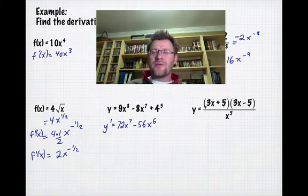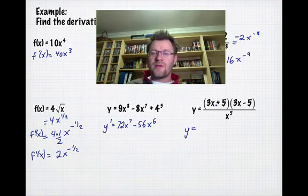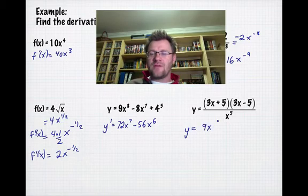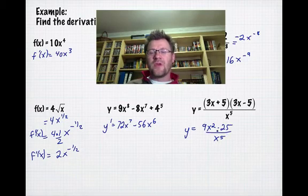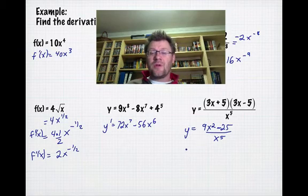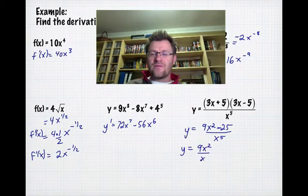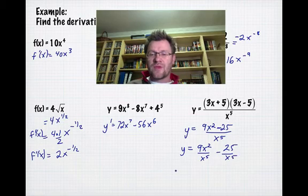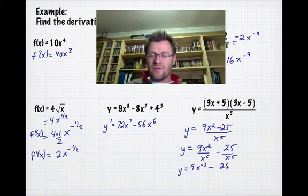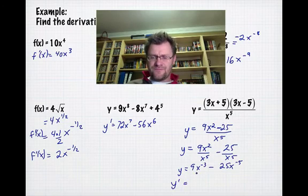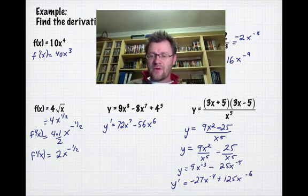Finally, if you have something like this, you need to get individual terms. We'll expand the top: (3x + 5)(3x - 5) is the factored version of a difference of squares, so that's 9x² - 25, all divided by x⁵. We don't have a rule for dividing yet, so we'll rewrite as 9x²/x⁵ - 25/x⁵, which gives 9x^(-3) - 25x^(-5). Taking the derivative: -27x^(-4) + 125x^(-6).